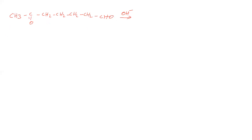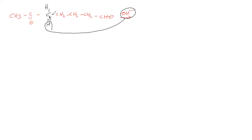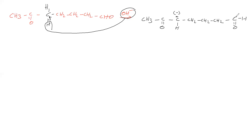So this base is abstracting this proton, and this bond is shifting to form a carbanion. We can write: CH₃C=O–CH⁻ carbanion, then (CH₂)₄CHO. Next step: this carbanion is attacking the carbonyl carbon, and this bond is shifting here.